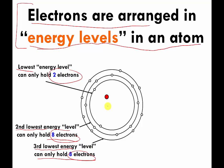If I have one proton, I have a hydrogen atom. If I wanted to make an electrically neutral hydrogen atom, I would need one electron to balance out the positive charge of the one proton. That electron will go into the first energy level. Now there's an electron sitting in the first energy level, and so this is a neutral hydrogen atom.